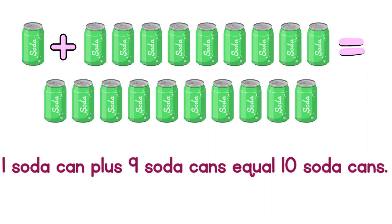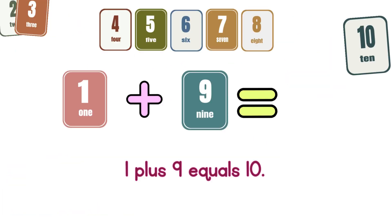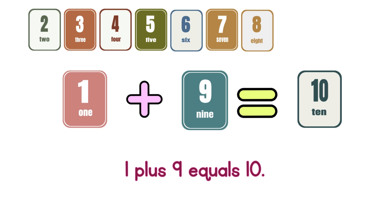1 soda can plus 9 soda cans equals 10 soda cans. 1 plus 9 equals 10.